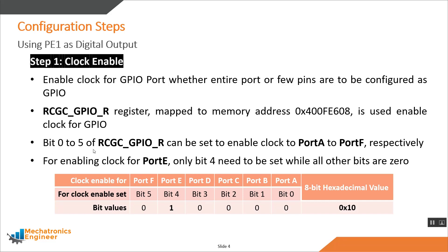Bits 0 to 5 of the clock gating control register can be set to enable the clock for port A to port F respectively. As you can see, bit 0 corresponds to port A, bit 1 corresponds to port B, and so on. Since we want to enable the clock for port E only, bit 4 is set to 1 while all other bits are 0.